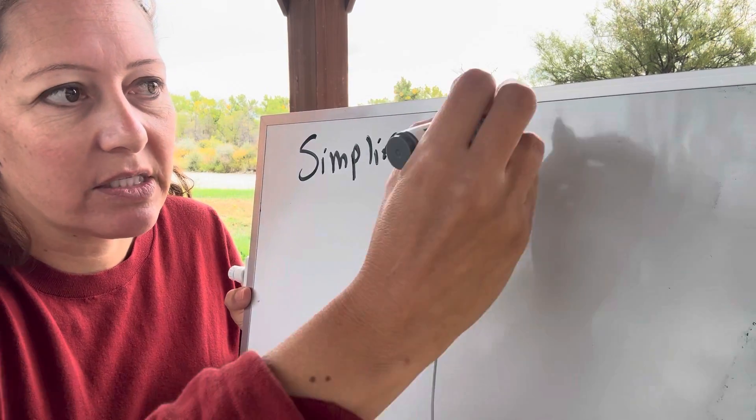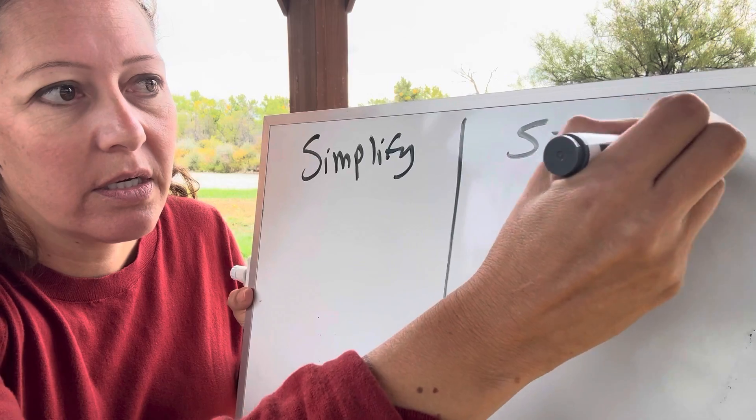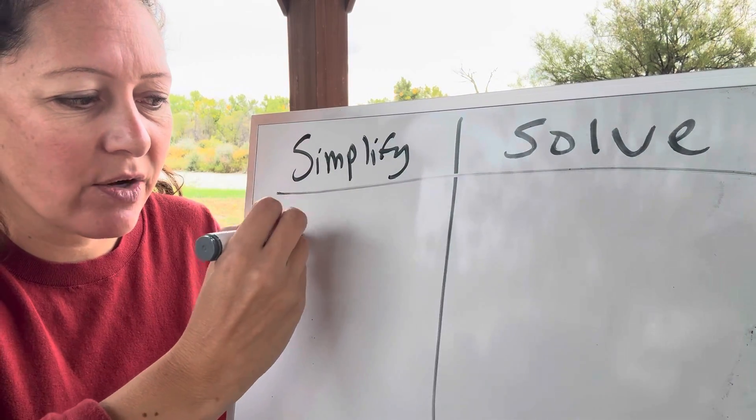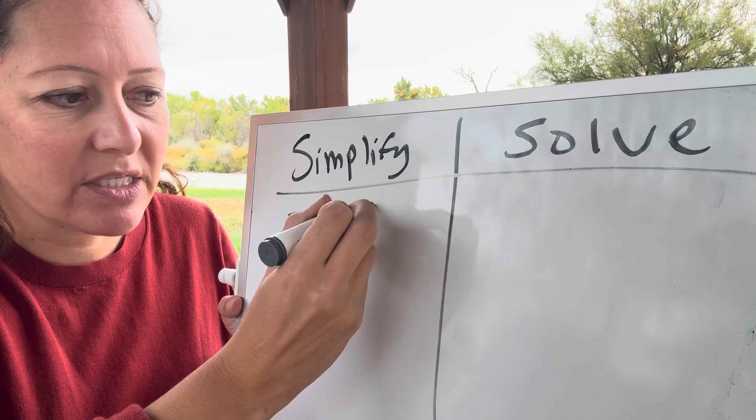And I kind of talked about this just a second ago, but simplify could be like, okay, I have 2x plus 3 squared. Let's make it squared.